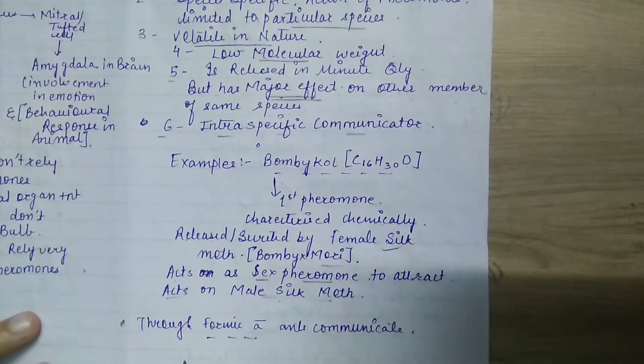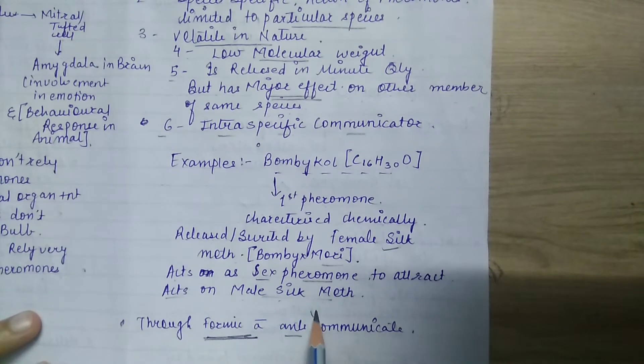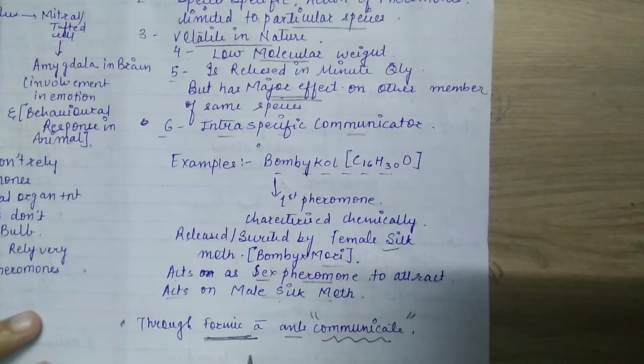In the same way, if we talk about ants, they also have secretion of formic acid, which is used to communicate. So we have noted two pheromones here.